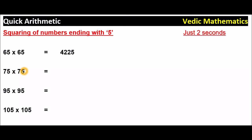75 times 75. 5 times 5 is 25, and the number is 7. What is the number after 7? 8. So 7 times 8 is 56. The answer is 5,625.